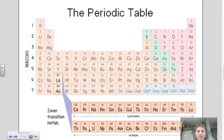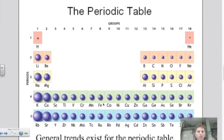It's that simple. So general trends exist for the periodic table, both horizontally and vertically. The horizontal trends that we see here, we actually call periods. So if I move across the periodic table within a row, I move across a particular period.